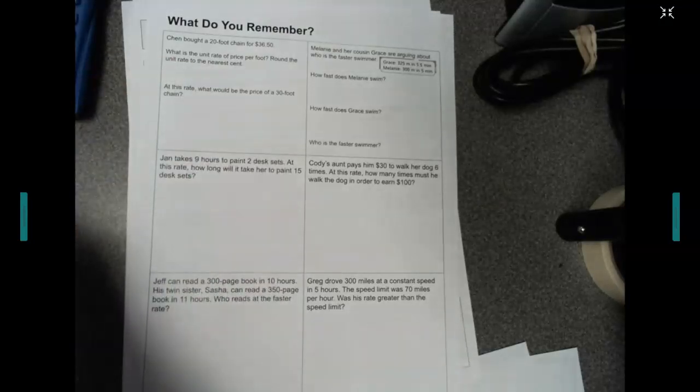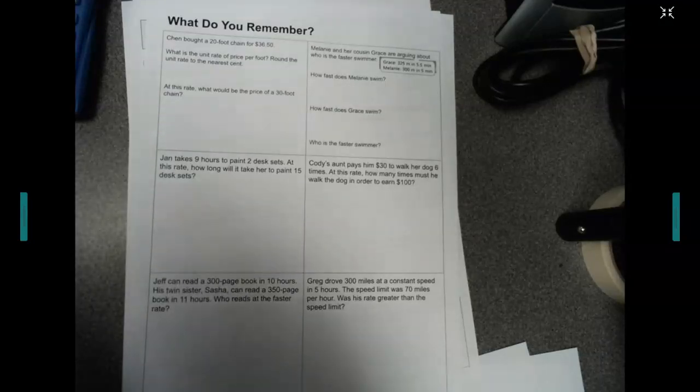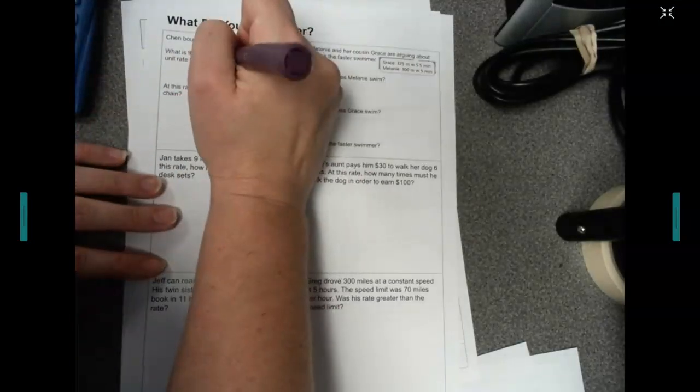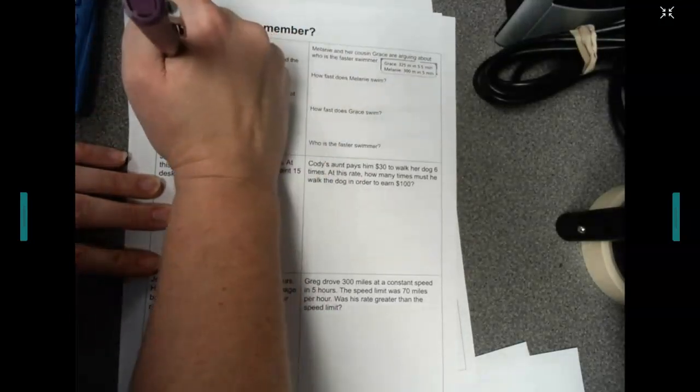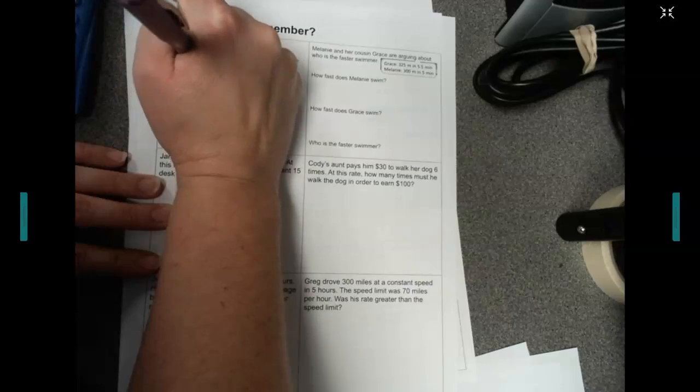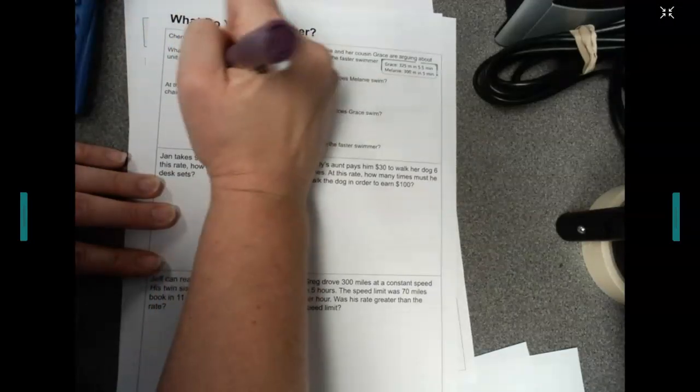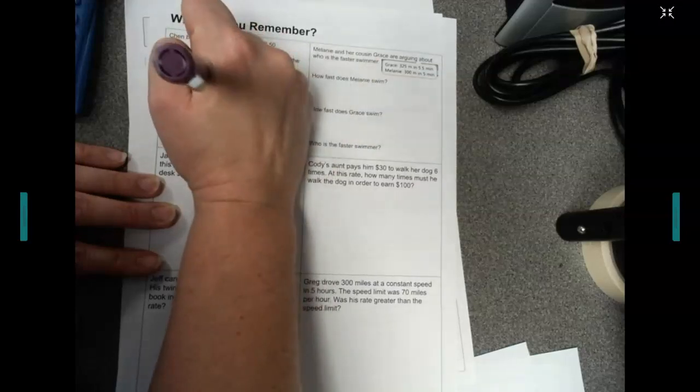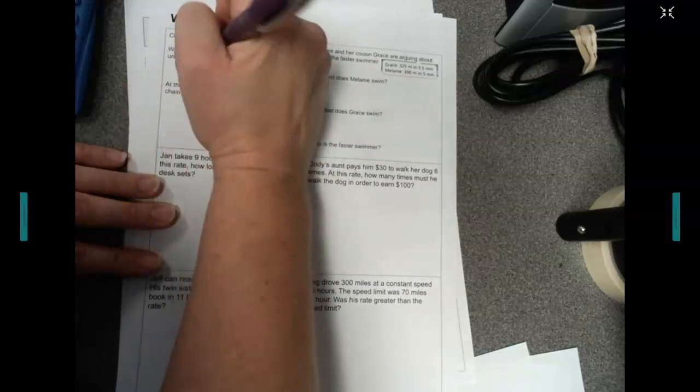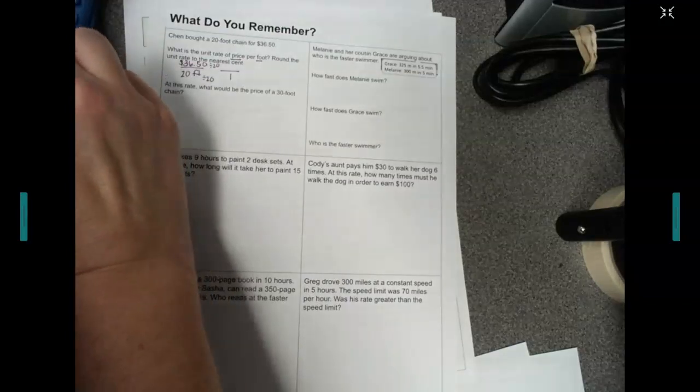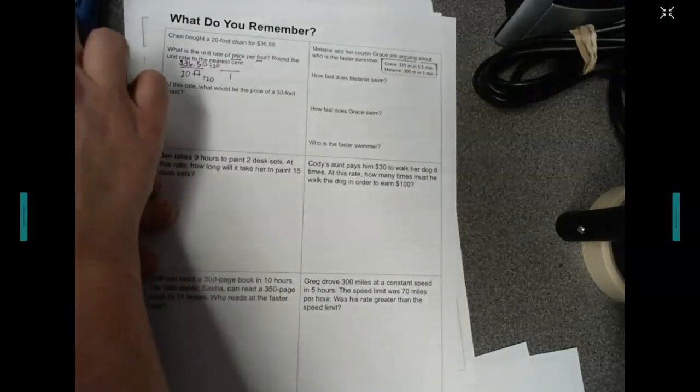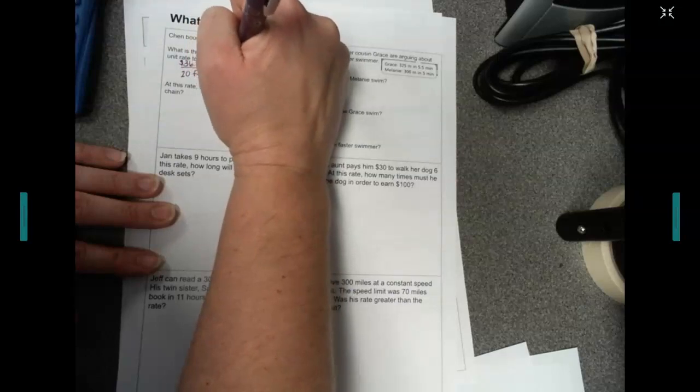Okay, let's look at our first one. Chen bought a 20-foot chain for $36.50. What is the unit rate of price per foot? So we're doing price per foot, so price goes on top. $36.50 over 20 feet of chain. The unit rate means we need one on the bottom, so I'm going to divide by 20 to get one. In my calculator, I'm taking $36.50 divided by 20, and I get 1.825.